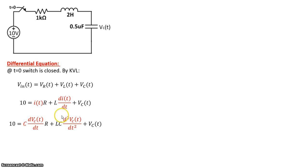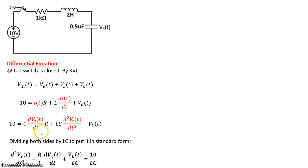This is not yet in standard form because the standard form requires the second-order term to have a coefficient of 1. To bring this differential equation into standard form, let's divide both sides by LC. We get: d²V/dt² + (R/L) dV/dt + V/LC = 10/LC. In this standard form, R/L is the 2ζωn term where ζ is the damping factor, 1/LC is ωn², the undamped natural frequency squared, and 10/LC is the forcing function.